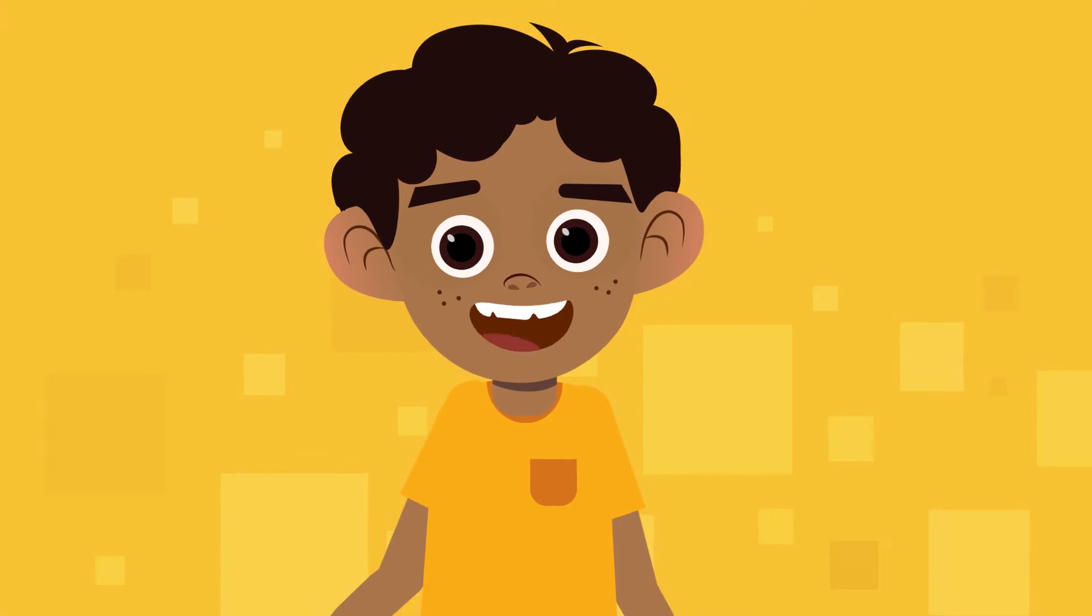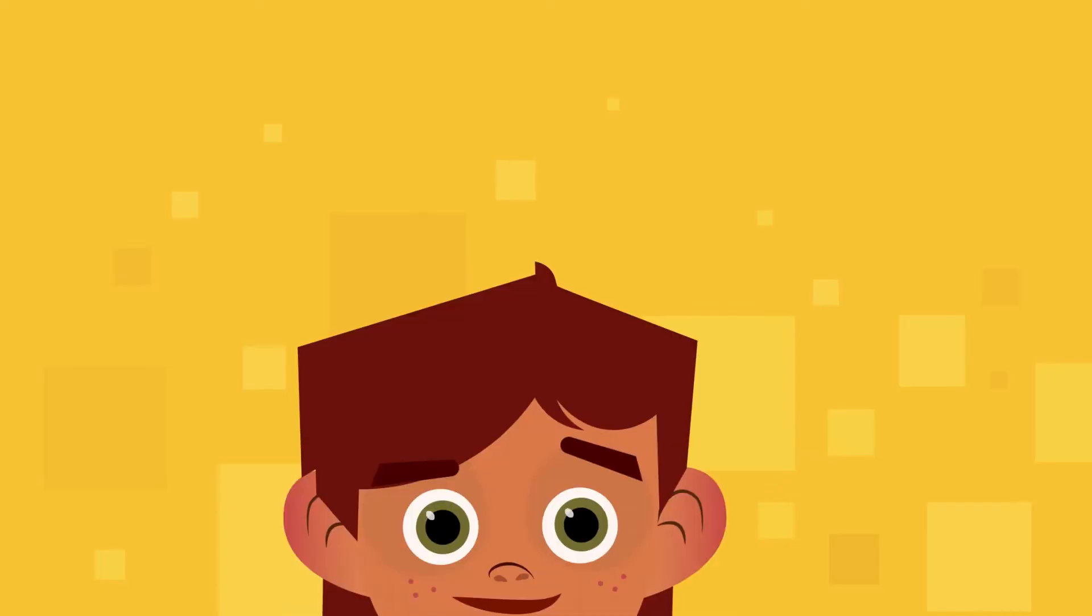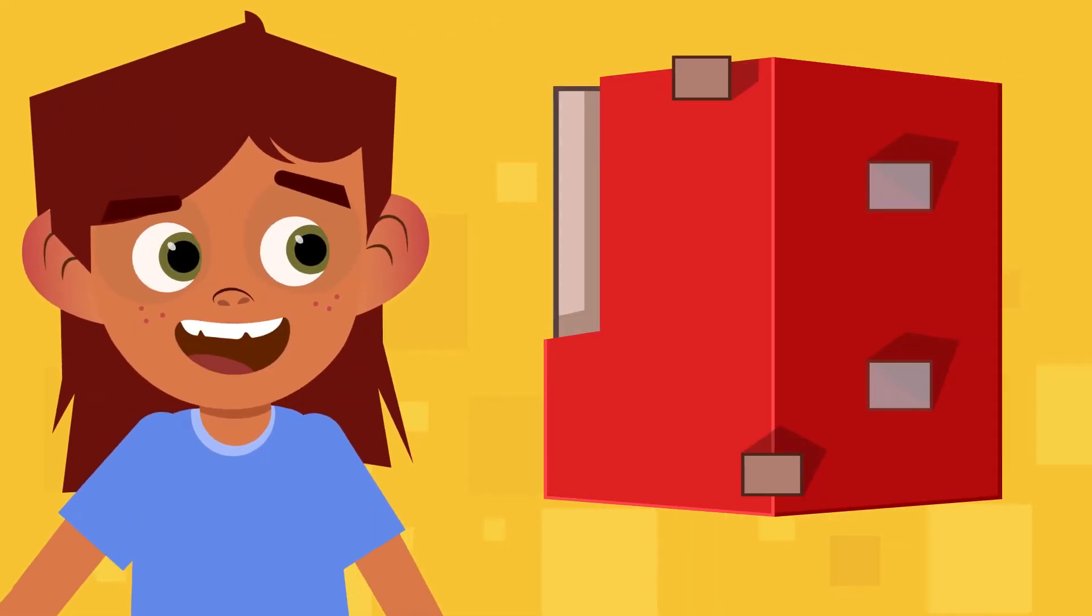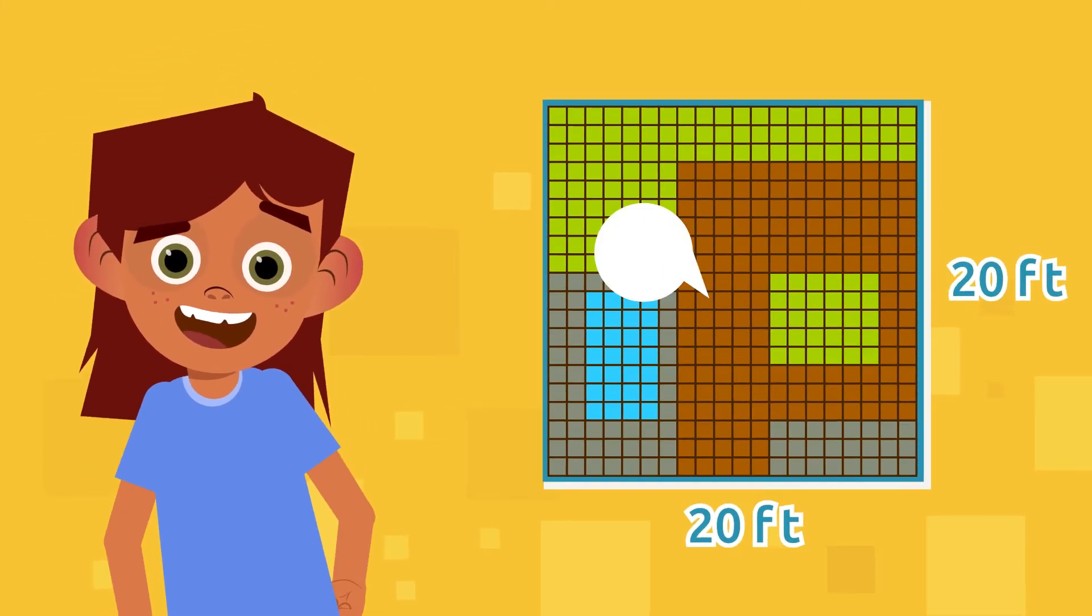It is very important to know how to find the area of the square. Let's look at some examples. Patricia is going to build a house on a square lot. If each side measures 20 feet, how big would be the total surface area of Patricia's house?